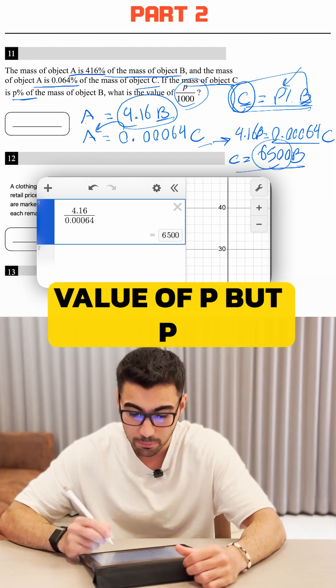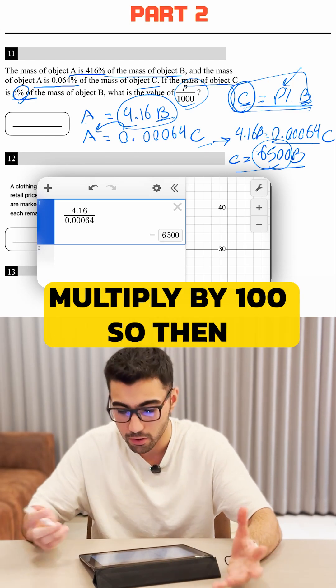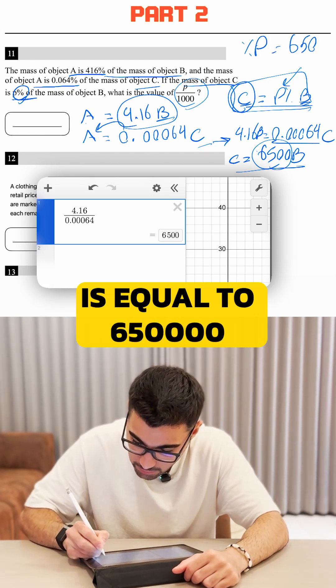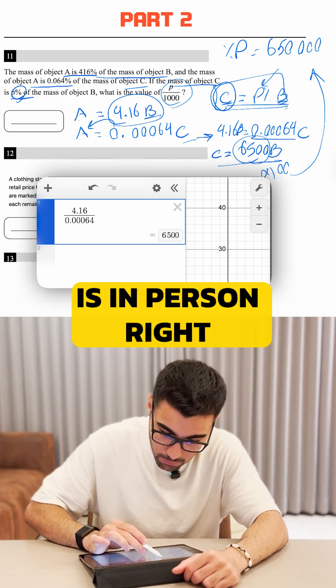So this is the value of P, but P is in percent. So we need to convert this into percent. So we're going to multiply by 100. So then P, which is in percent, is equal to 650,000. If we multiply this by 100, it gives us the P, which is in percent.